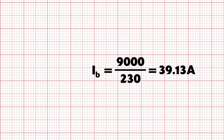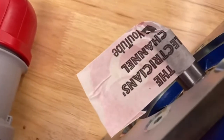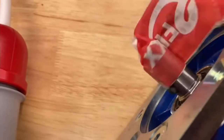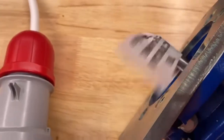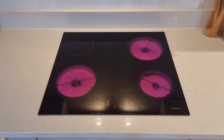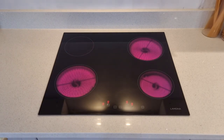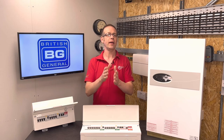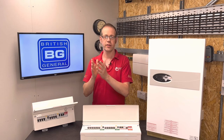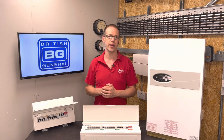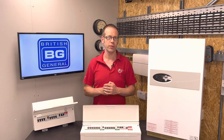Now, for more seasoned viewers, you'll know that there are other things that could affect the design current for a circuit, things like power factor on inductive or capacitive loads, and diversity on certain circuits as well. As we go through this process, you may think of other elements that could come into play that we haven't considered. But bear in mind, we're looking here at our first steps to the process of design, and we'll cover many additional points in other training packages. So stay tuned for those.